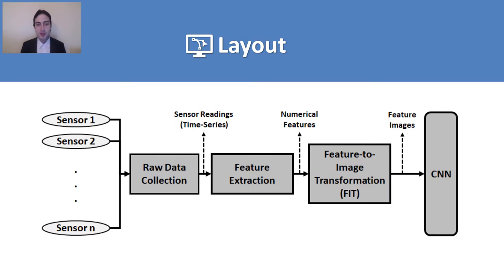The general system layout would look something like this. So we have a bunch of sensors and we perform raw data collection in a time series manner. Then we feed the time series data into a feature extraction algorithm, which gives us a feature vector consisting of numbers. We then feed that to our FIT algorithm, which generates feature images that we give to the CNN and then perform the classification.